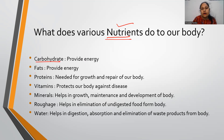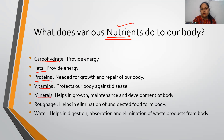Energy-giving foods are carbohydrates and fats. Body-building foods are proteins — they build the body. Some vitamins and minerals are also necessary for body building. For protective foods, proteins, vitamins, and minerals are all essential for the body.